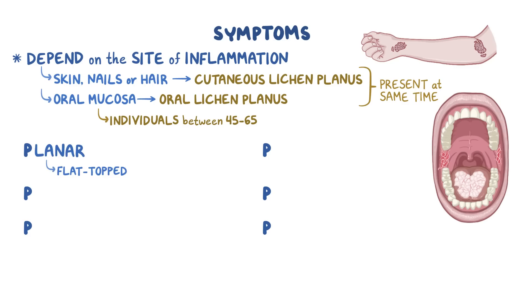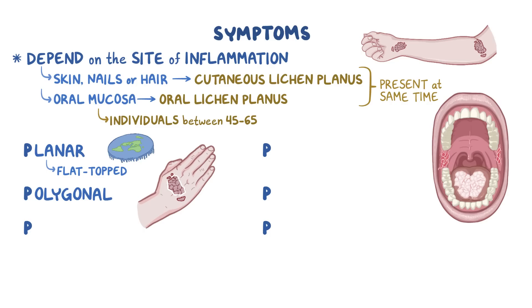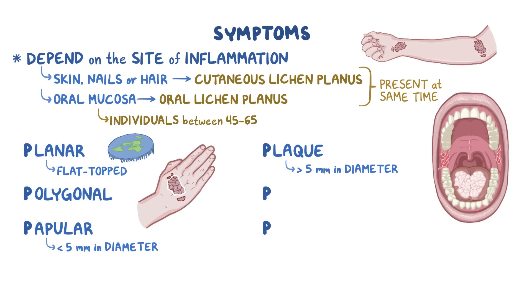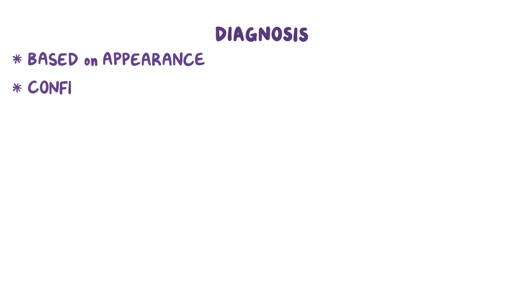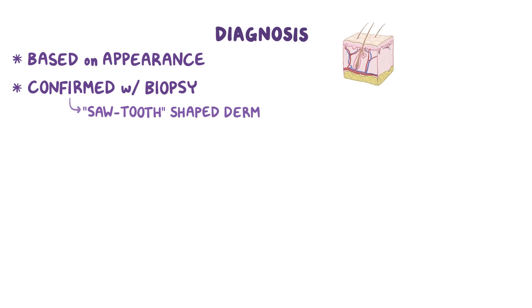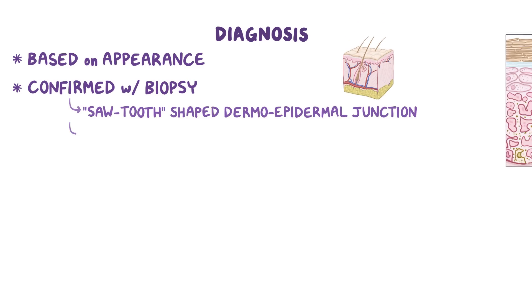The next P is for polygonal, which means that the rash has multiple sides. The next P depends on the diameter of the skin rash — if it's less than 5 mm in diameter it's called papular, but if it's more than 5 mm it's called a plaque. The next P is for the purple color of the skin rash. And the final P is for pruritic, meaning that it's itchy. Sometimes the surface of oral lesions are covered with white, reticular, or net-like lines called Wickham striae — that's the most common feature in oral lichen planus. The diagnosis of lichen planus is based on its appearance and can be confirmed with a biopsy that shows a sawtooth-shaped dermoepidermal junction and a thickened stratum granulosum, or hypergranulosis.